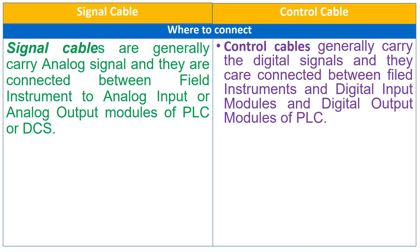The signal cables are generally used to carry analog signals and they are connected between field instrument to analog input or analog output module of PLC. While the control cables are generally used to carry digital signals and they are connected between field instrument and digital input-output modules of PLC or DCS.